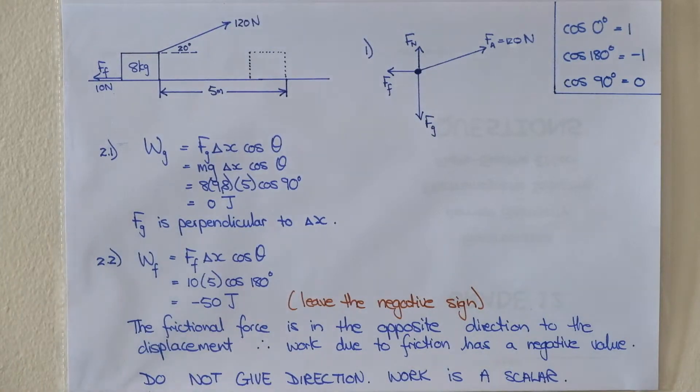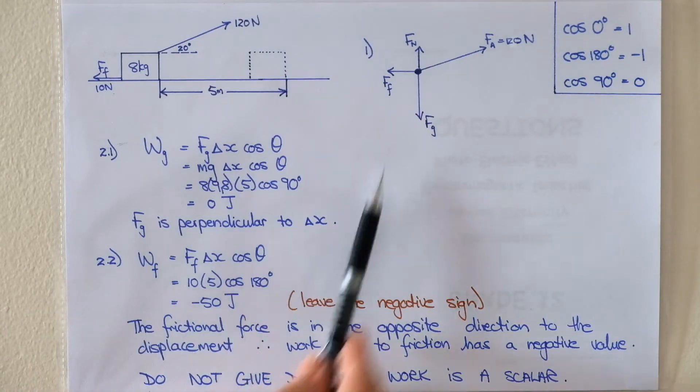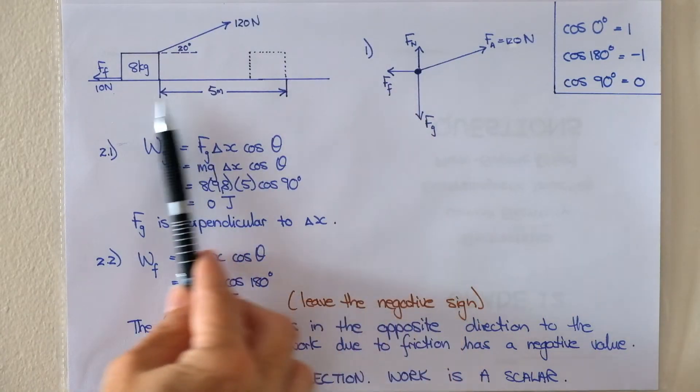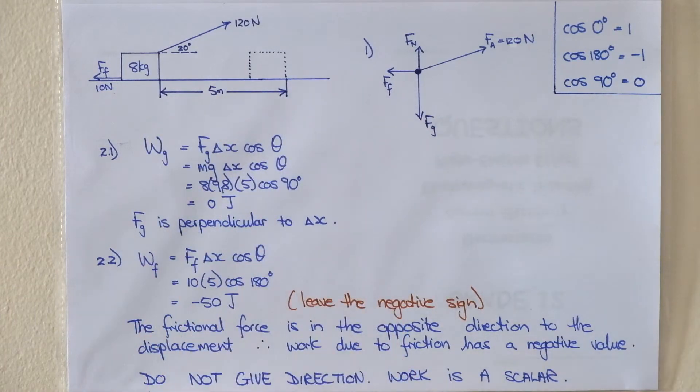The second question was to calculate work due to the frictional force. The frictional force is to the left. The box is displacing to the right. So your angle is 180 degrees. Frictional force was given as 10. The displacement was given as 5.